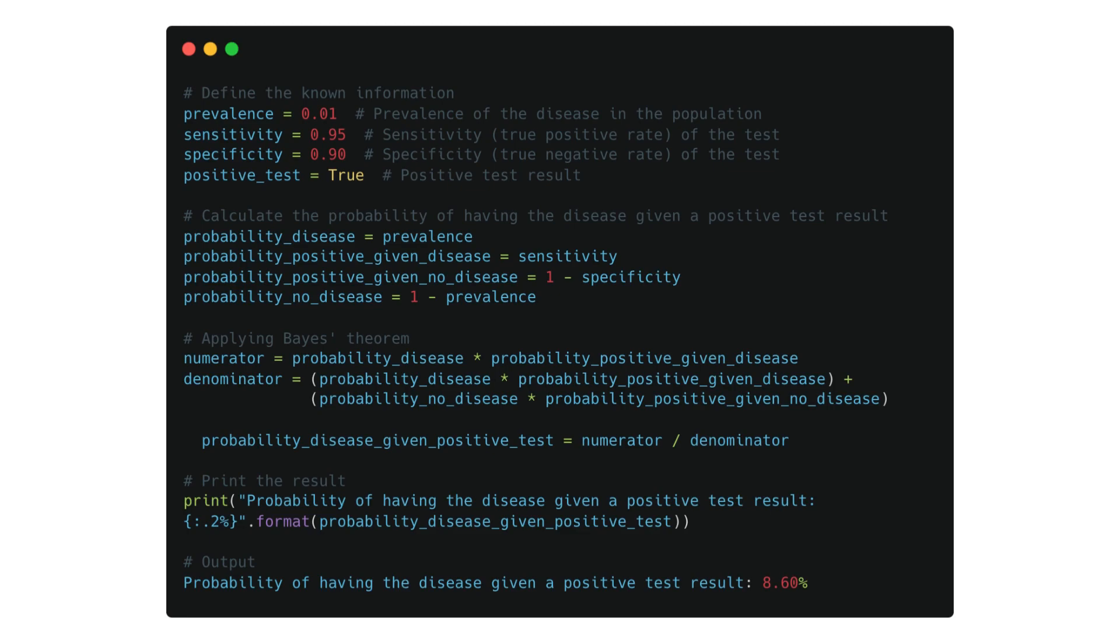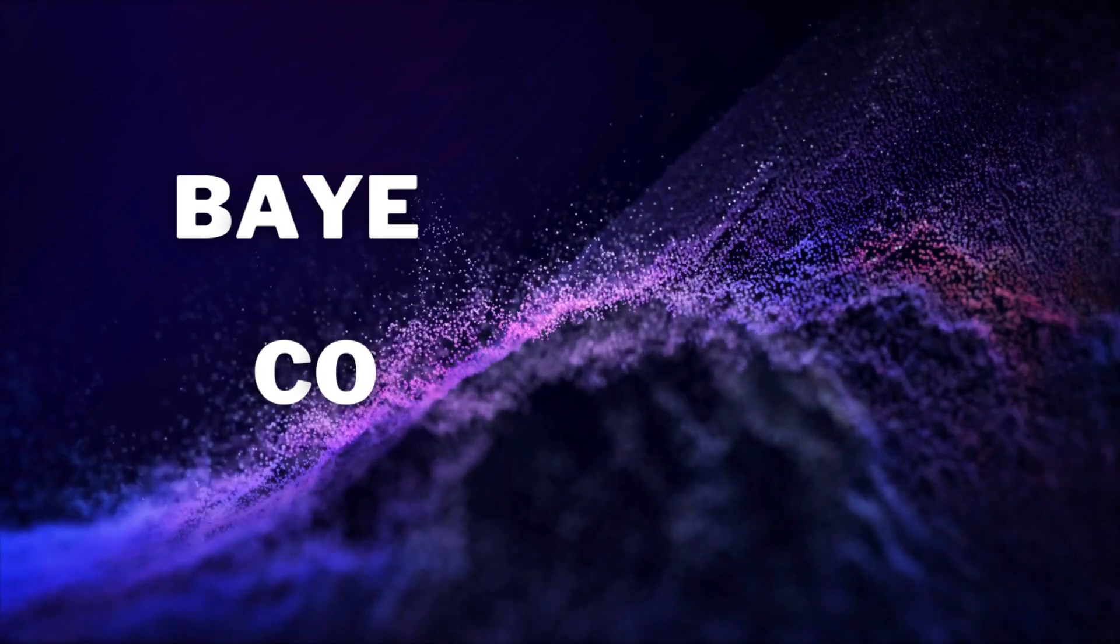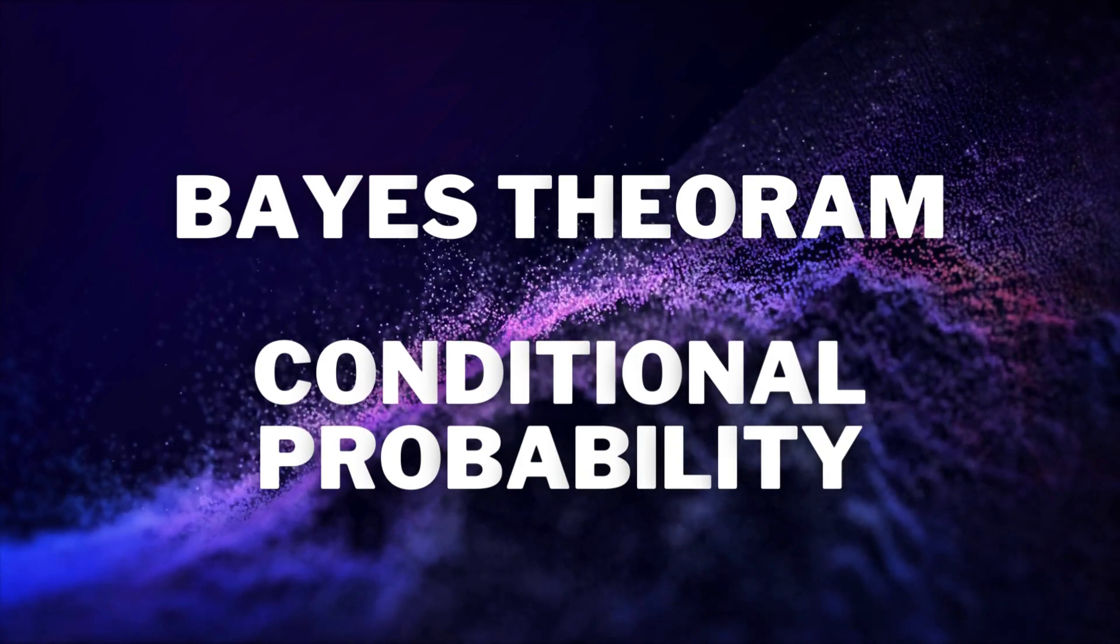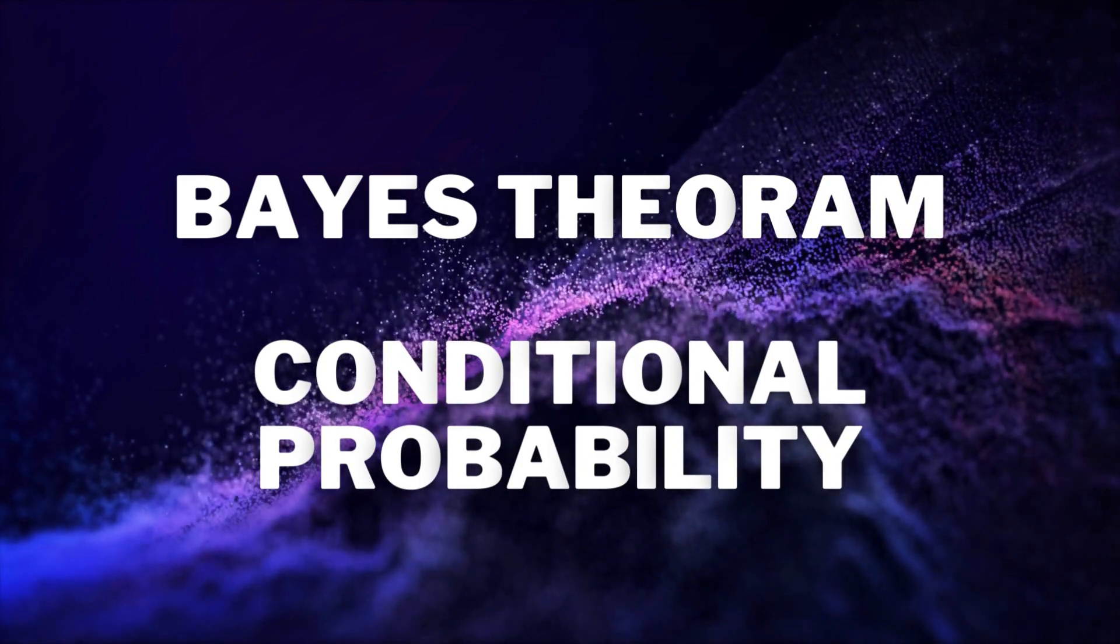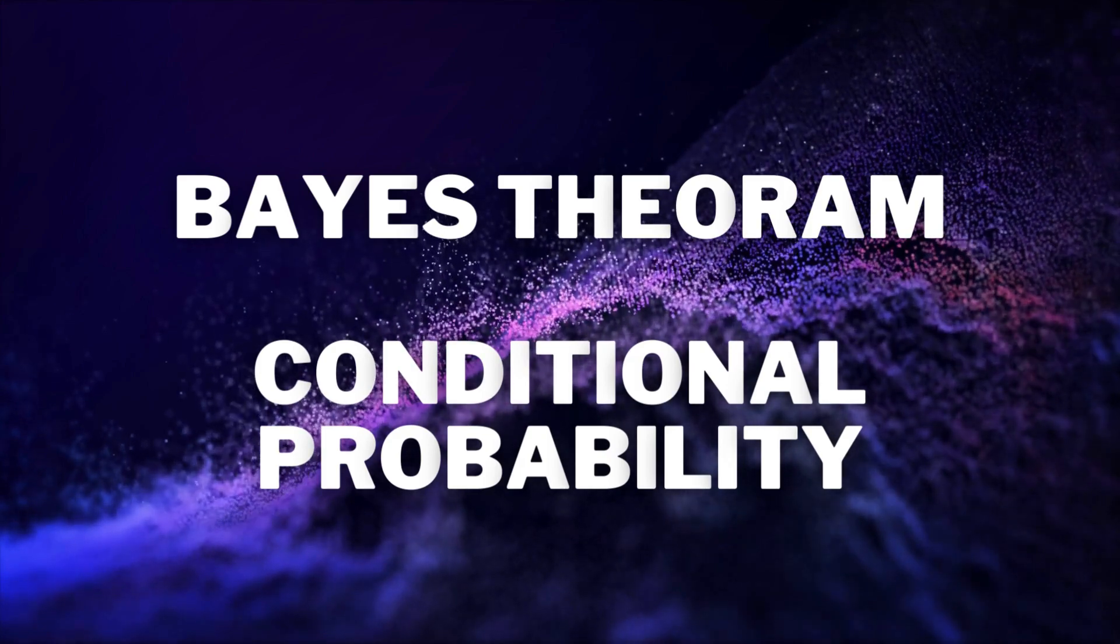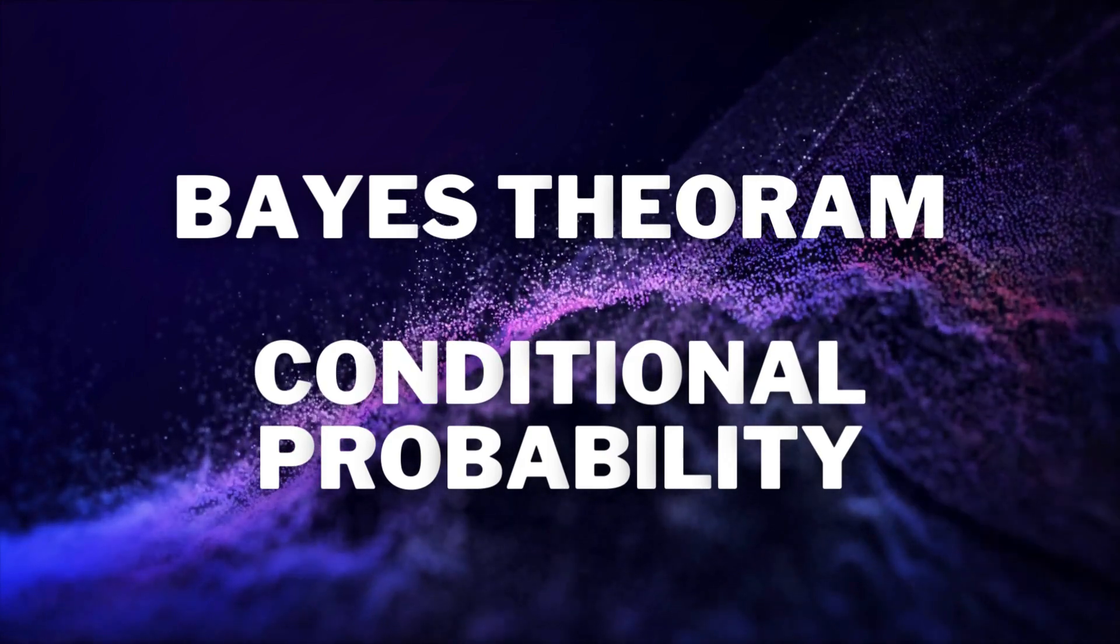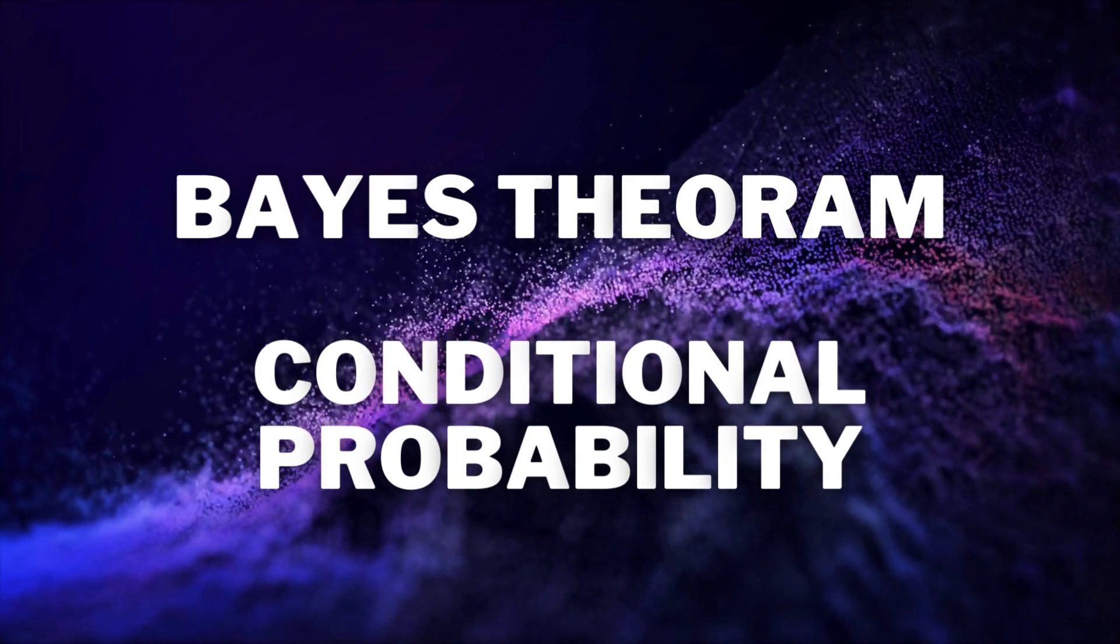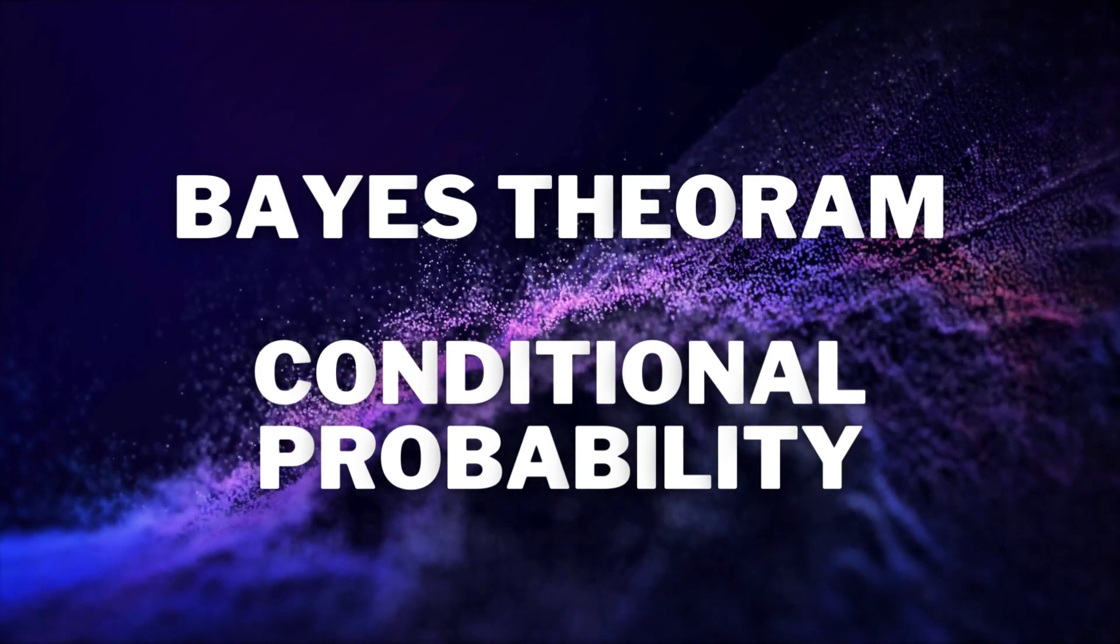And that's how we can apply Bayes theorem and conditional probability in real-world situations with the help of Python. I hope you enjoyed this video and learned something new. Make sure this Bayes theorem concept will help you more in the Bayesian networks in artificial intelligence. Make sure you learn this concept very deeply. Don't forget to like, comment and subscribe for more exciting content. Thank you guys.